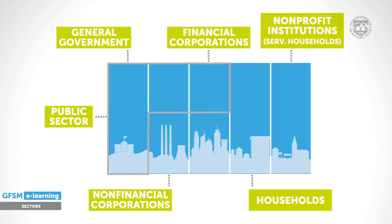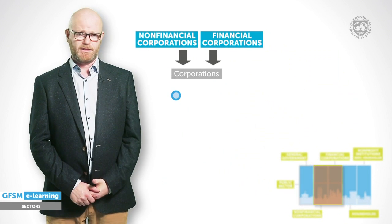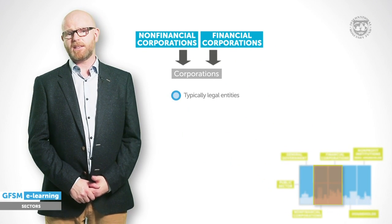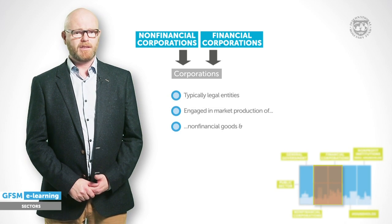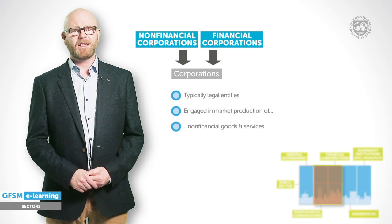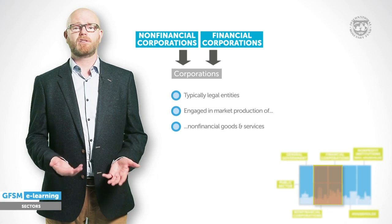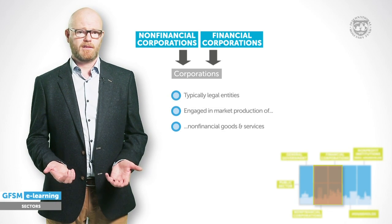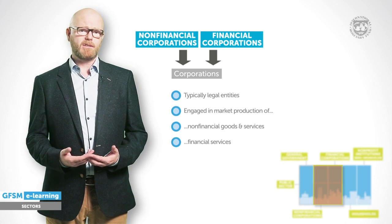Let's move on to the next two sectors: the non-financial and financial corporations. Corporations are typically legal entities, and a central characteristic is that they operate with the objective to engage in market production of goods and services. The non-financial corporation sector covers units engaged in the production of goods and services such as food, furniture or cars, and the provision of legal or real estate services. The financial corporation sector typically includes banks, insurance corporations, holding companies and mortgage lenders. Note that this sector also includes the central bank, which is not classified as a general government unit.